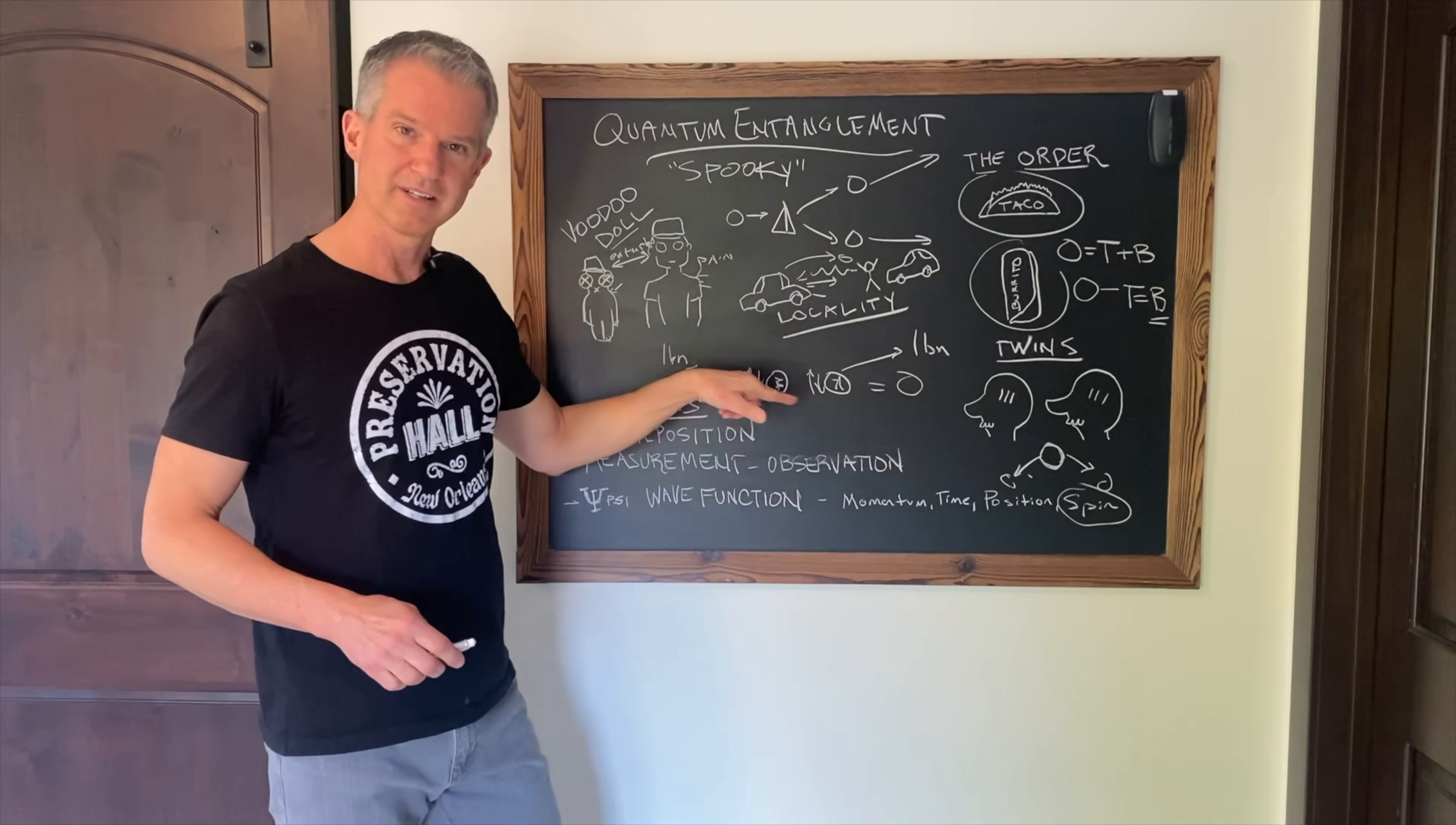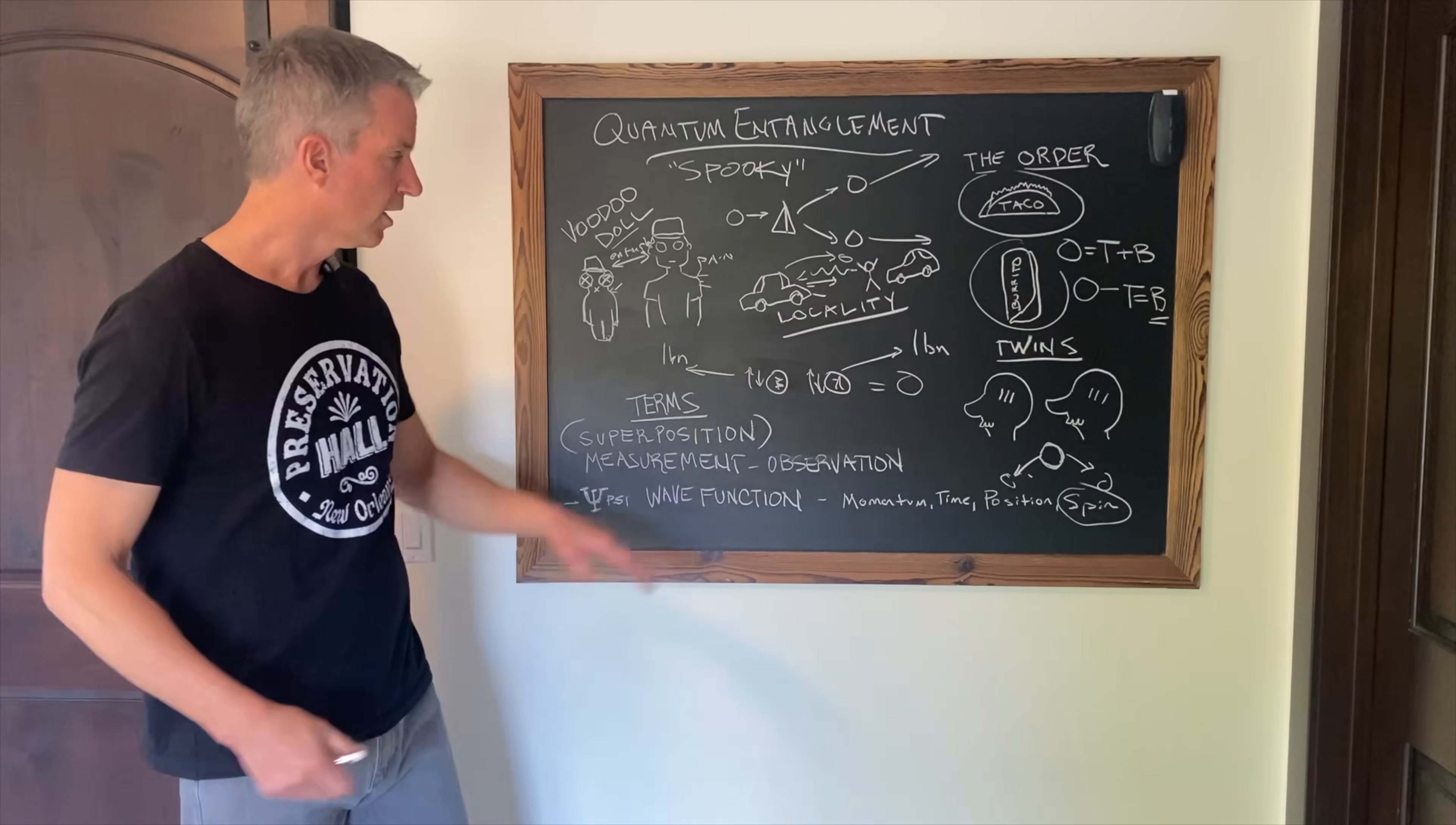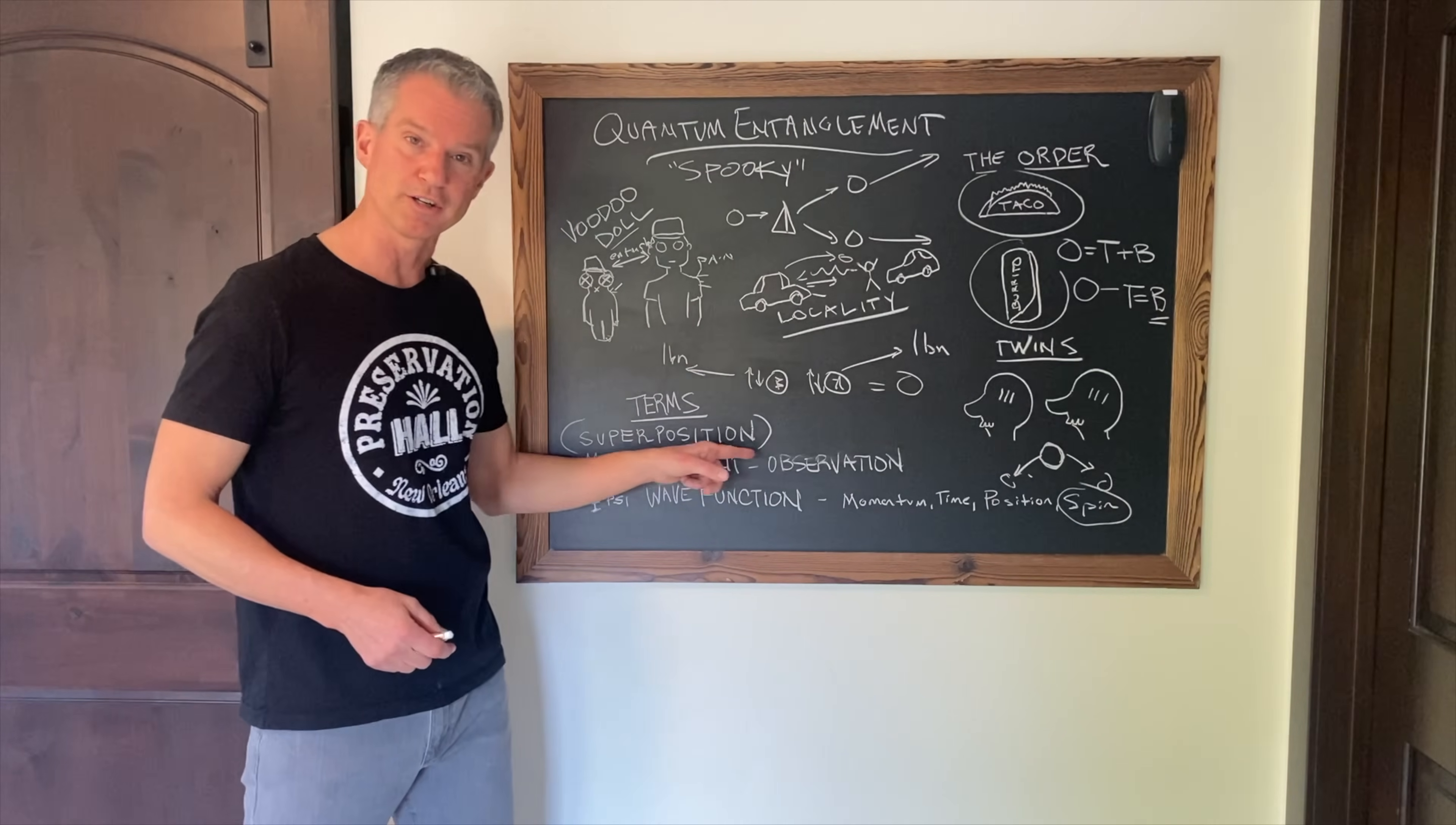What is spooky is this. These particles exist in a state of superposition. Remember, when we talked about Schrodinger's cat, the cat would be in a state of superposition, both alive and dead. Going back to our electrons, B and A would exist in a state of superposition, having both upspin and downspin until they were observed, until something measured their spin.